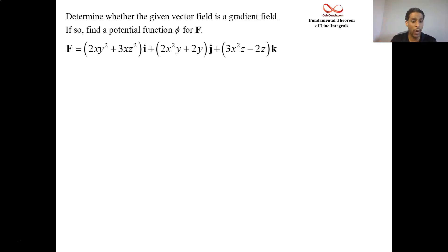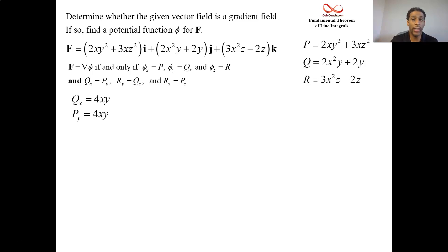So we're looking at first for Py and Qx, like in 2D. But then there are also two more that we have to do involving r. Ry is Qz, Rx is Pz. So first up, Qx is 4xy. Py also 4xy.